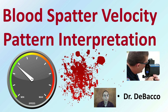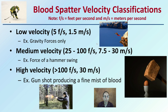Here we're going to be looking at blood spatter velocity pattern interpretation, meaning how quickly the blood was traveling and how it's going to look when it impacts a surface. There are blood spatter velocity classifications, and just as a note, f/s is feet per second and m/s is meters per second as a rate.